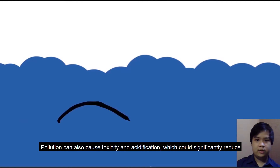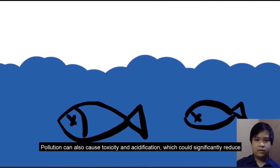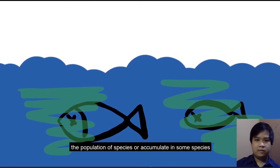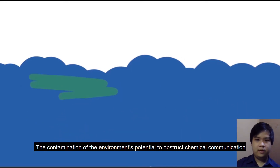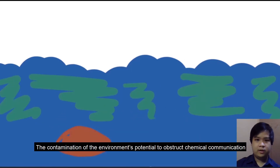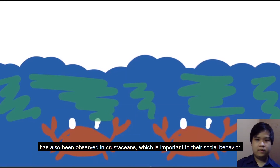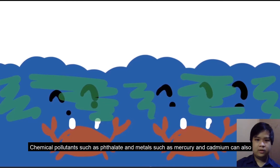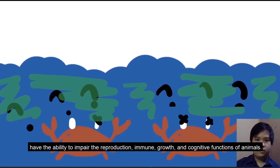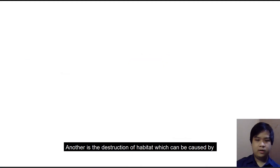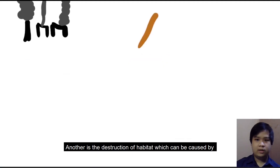Pollution can also cause toxicity and acidification, which could significantly reduce the population of species or accumulate in some species and make them unsafe for predators to eat. The contamination of the environment's potential to obstruct chemical communication has also been observed in crustaceans, which is important to their social behavior. Chemical pollutants such as phthalates and metals such as mercury and cadmium can also impair reproduction, immune growth, and cognitive functions of animals.